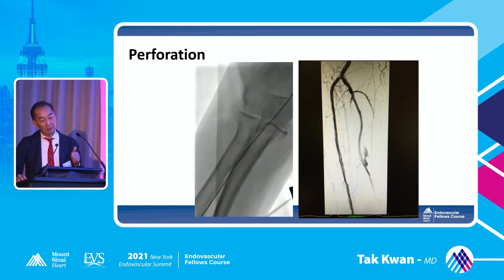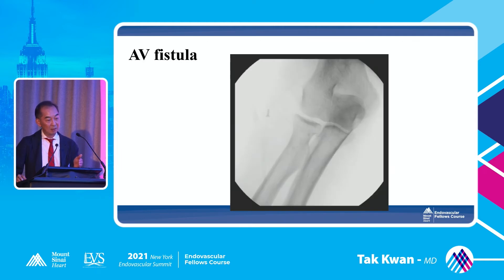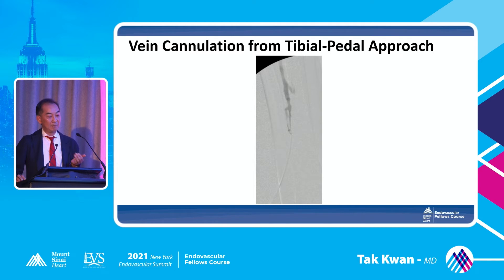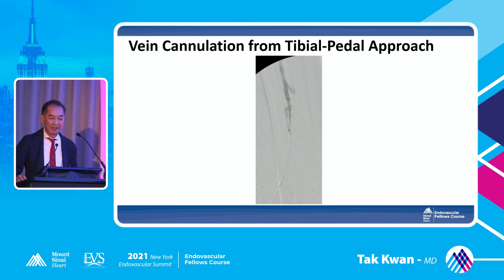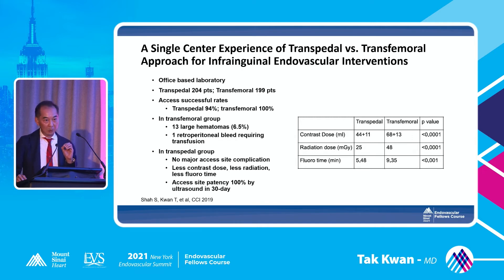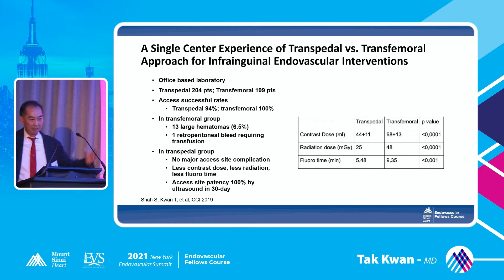Perforation happens — in radial, it happens; in pedal, it happens. AV fistula happens in radial and in pedal approach too. Sometimes you think it's an artery but you've punctured a vein. Regarding radiation exposure — this happens in radial mainly at low-volume centers. The pedal approach is much better than femoral because the camera is right on the leg rather than in the fatty tissue of the abdomen, so you can reduce radiation significantly.